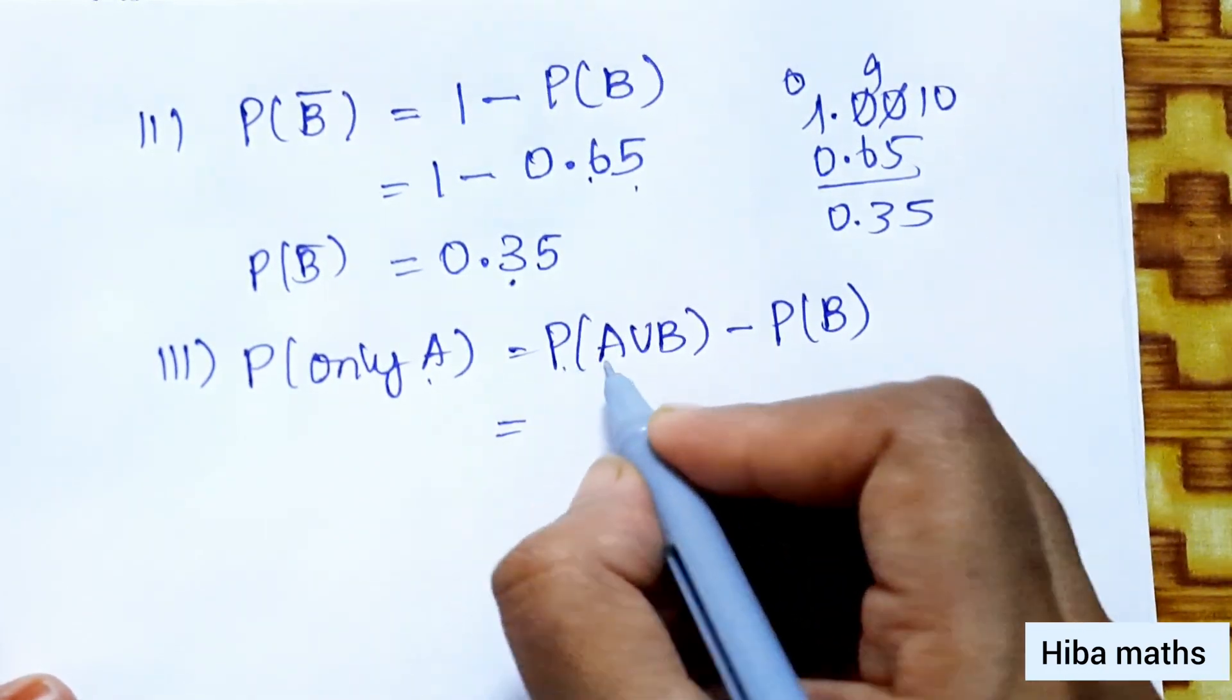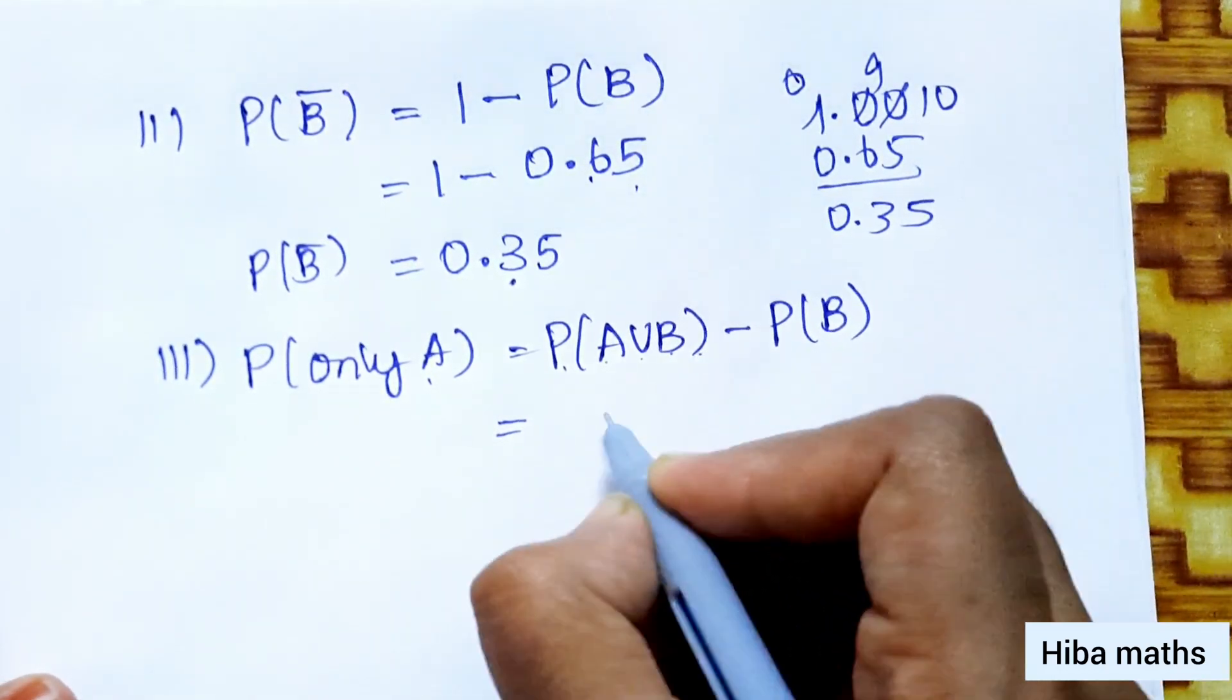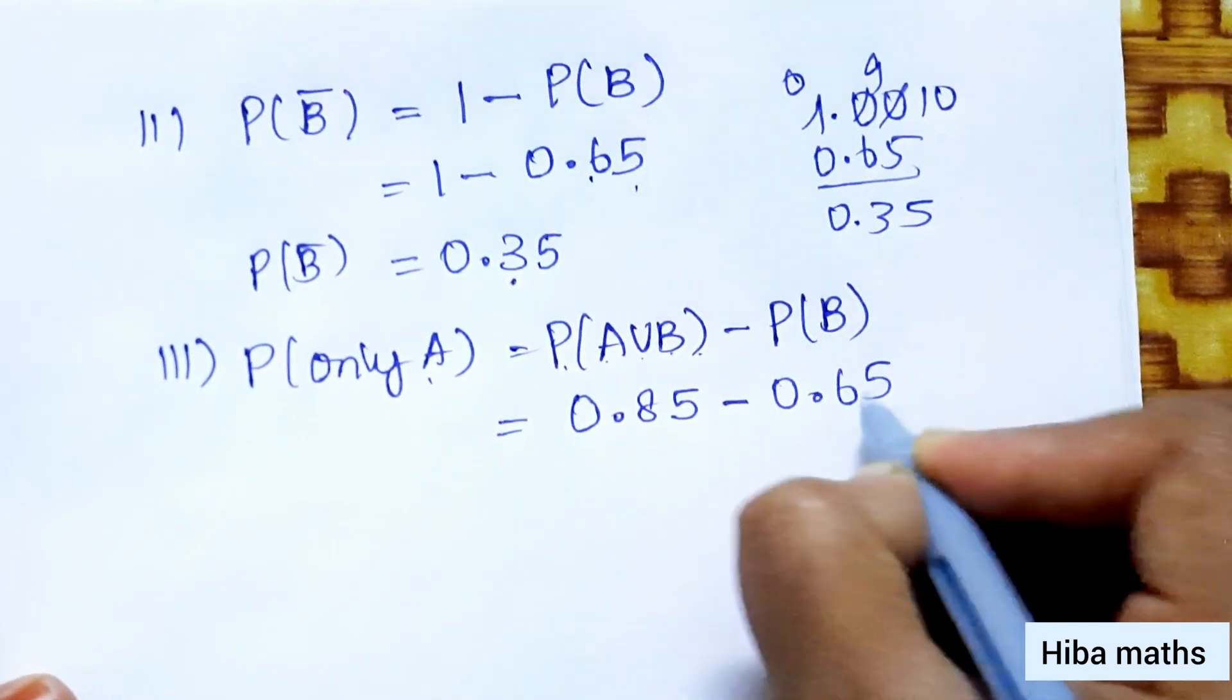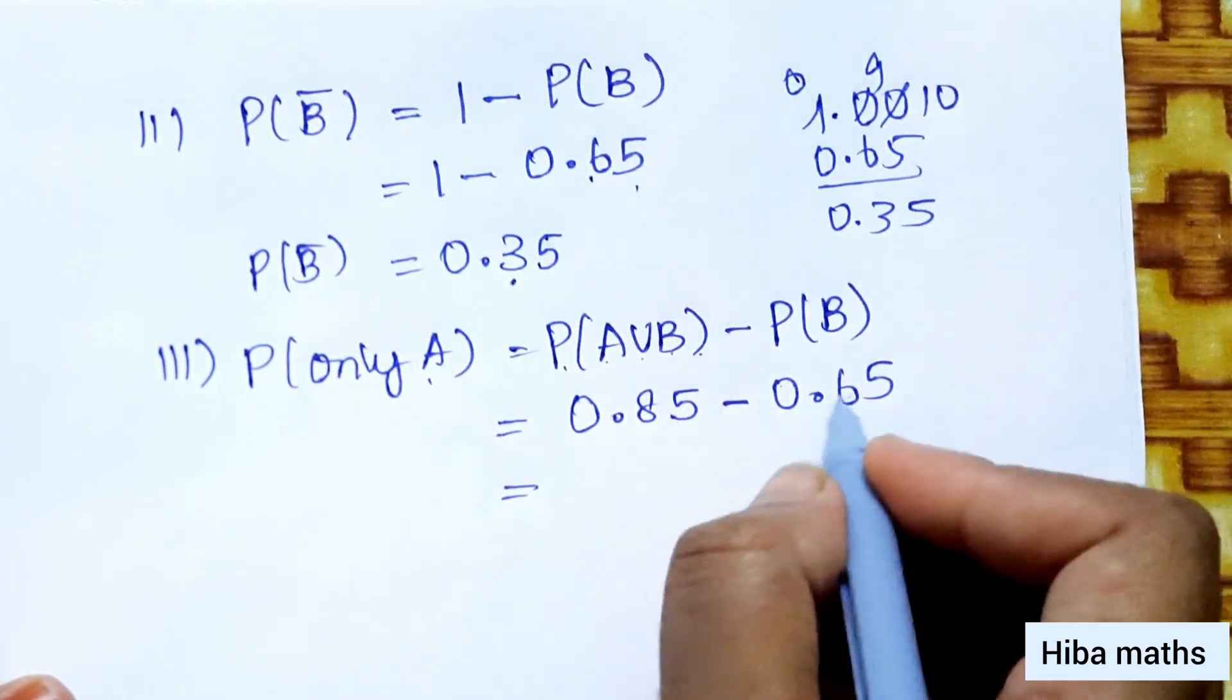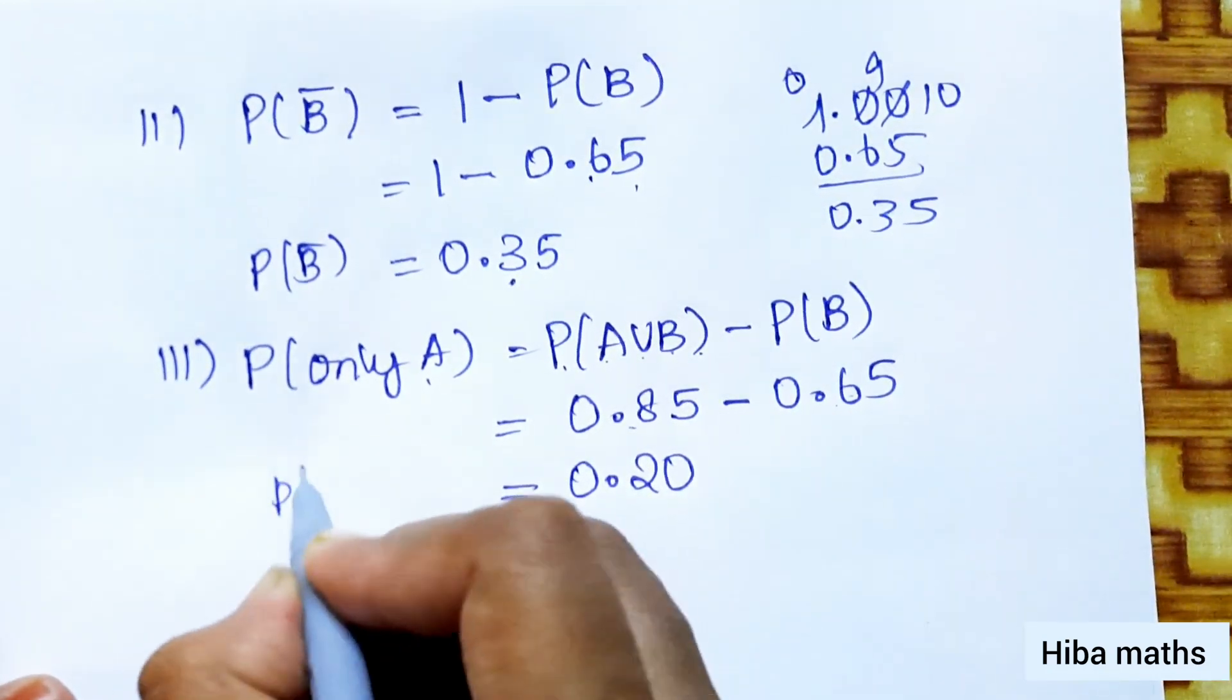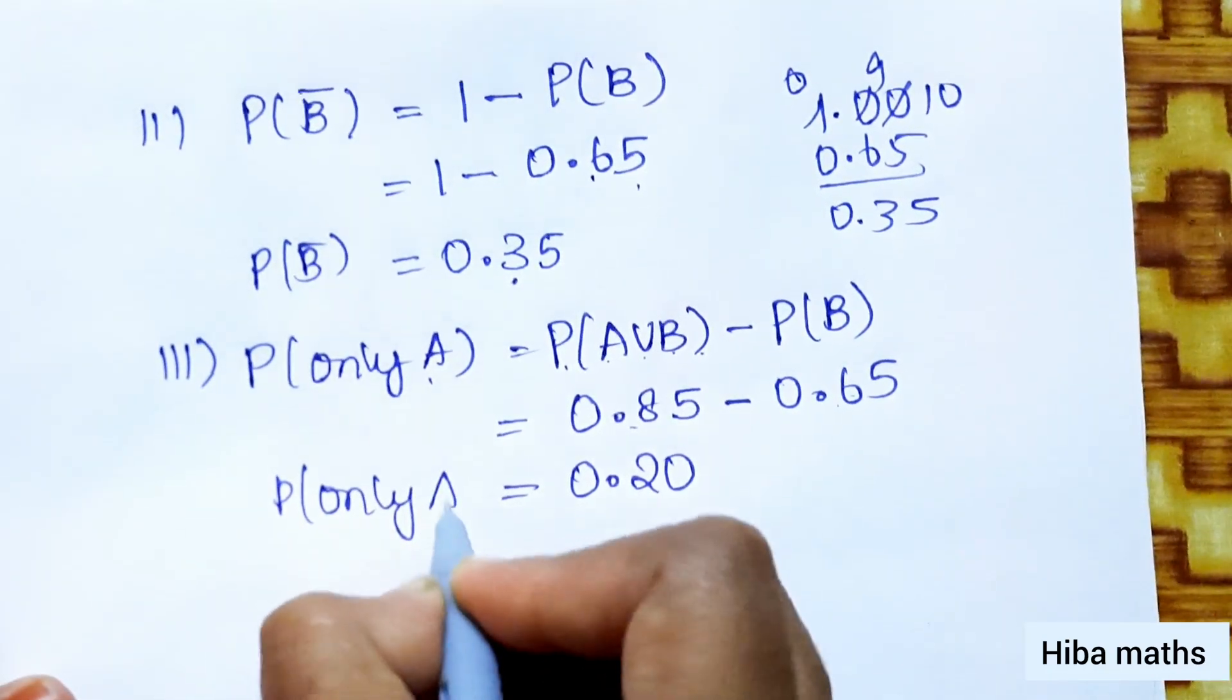P(A union B) value is 0.85, P(B) value is 0.65. So we get 0.85 minus 0.65 equals 0.20. This is P of only A value.